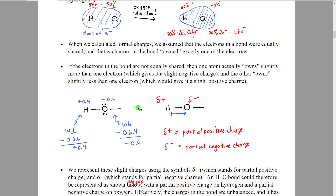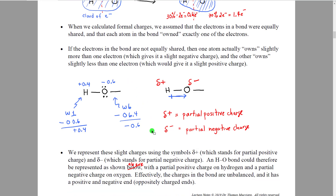We can represent these charges as shown here. The hydrogen has a positive charge, but the symbol we use for a partial positive charge — instead of 100% of a positive charge — is the Greek letter lowercase delta with a positive sign: delta-positive, or partial positive charge. Similarly, we see that the oxygen has a delta-negative, or partial negative charge.